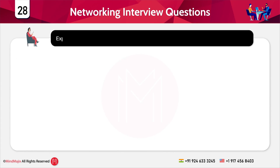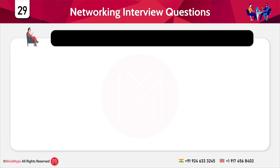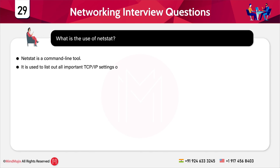The next question is: explain the use of traceroute. Traceroute is a tool used to list the path taken by a data packet from the router to the destination node; it also mentions the count of total hops taken in the entire route. Netstat is a command line tool used to list out all of the important TCP/IP settings of a connection.